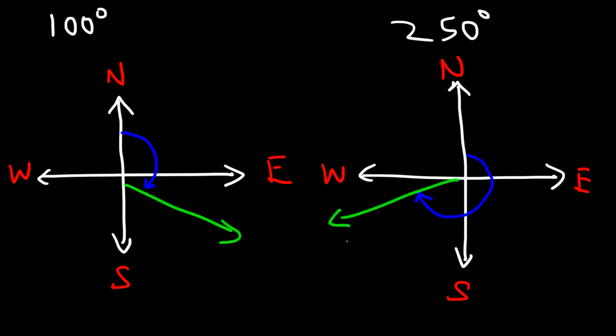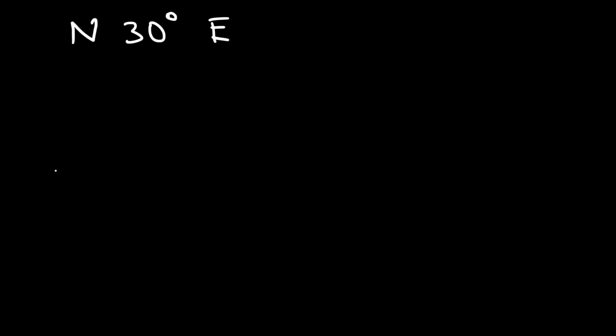So when dealing with bearings, always start with the north line, and then rotate in the clockwise direction. Now let's say we have the direction north, 30 degrees east. How can we represent that direction with a picture?